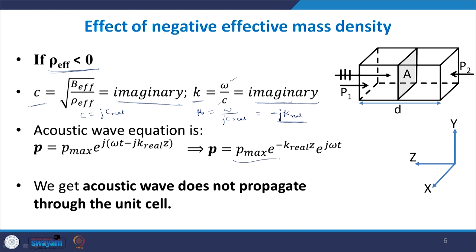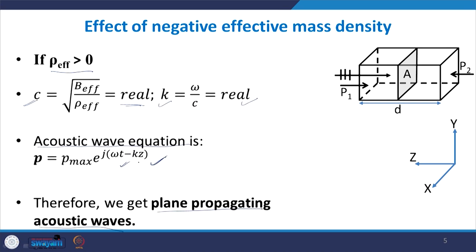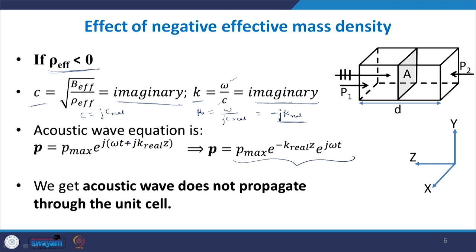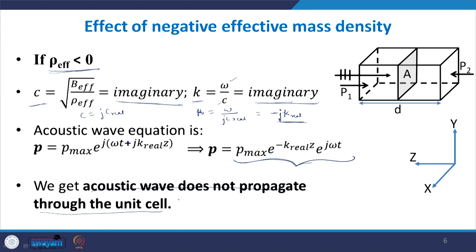Substituting this imaginary k into the plane wave equation gives a decaying wave rather than a propagating wave. Sound is defined as a propagating disturbance: fluctuations travel from point A to point B so the listener can hear it. Here the wave decays and does not propagate through the material, so we do not get acoustic wave propagation through the unit cell. This is the effect of negative mass density.